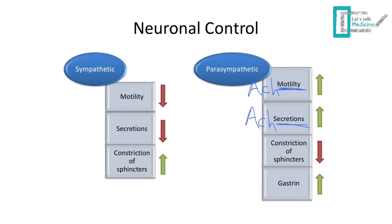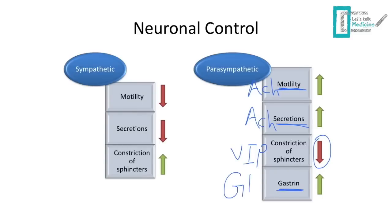Parasympathetic will also decrease the constriction of sphincters through a transmitter called VIP — vasoactive intestinal peptide. VIP usually works on sphincters by relaxing them; it's an inhibitory peptide, meaning the muscle relaxes instead of contracting. We also have increased secretion of gastrin — a hormone we'll discuss shortly — through GRP, which is gastrin-releasing peptide.